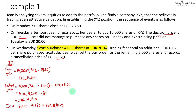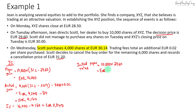To express the implementation shortfall in basis points, divide by the initial paper value. The initial paper value equals the number of shares you want to buy, 10,000, multiplied by the decision price of 29.60, which equals 296,000 euros. So the implementation shortfall is 11,840 divided by 296,000, which equals 4%, or 400 basis points.